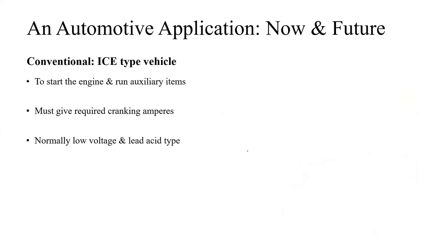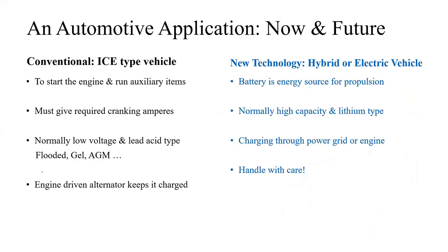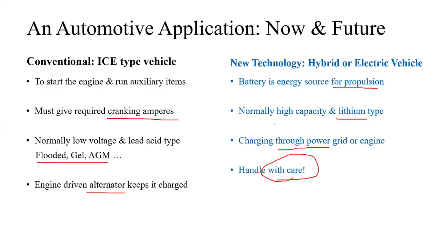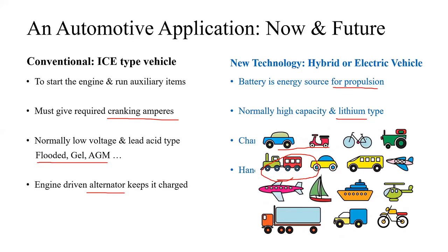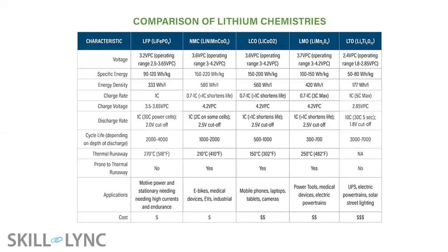When do you use lead-acid versus lithium-ion batteries? Lead-acid batteries — flooded, gel, or absorbent glass mat type — are used for cranking amperes to start an engine, charged by an engine-driven alternator. The newer technology uses lithium-ion batteries as a source of propulsion, charged through an external charger. There are also safety concerns with the newer battery types. Automotive applications range from bicycles to aircraft and trucks.